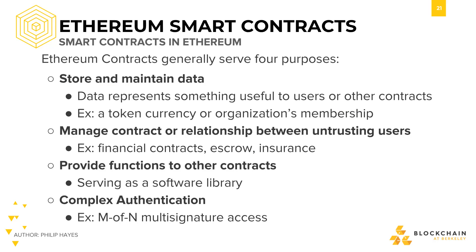Ethereum smart contracts generally serve four main purposes. They can be used to store and maintain data — data representing something useful to users or other contracts. For example, there could be a smart contract defining a new token currency, or perhaps a certain organization's membership, which you would have to pay a certain amount to obtain. Smart contracts can also be used to manage a contract or relationship between untrusting users. This is perhaps the most easily understood use of smart contracts, as it's just running a regular contract but on the distributed Ethereum network. For example, you could have smart contracts that manage financial contracts, escrow, or insurance.